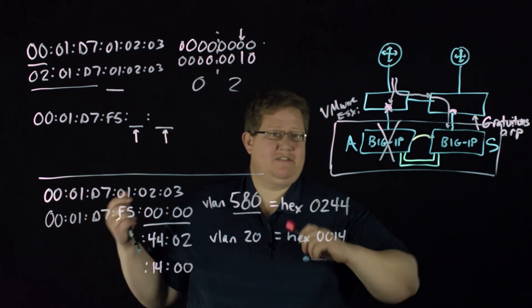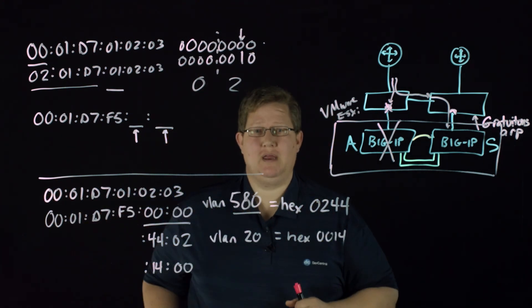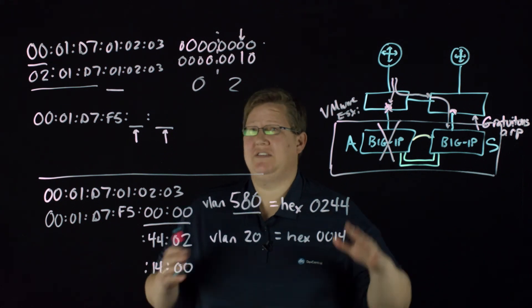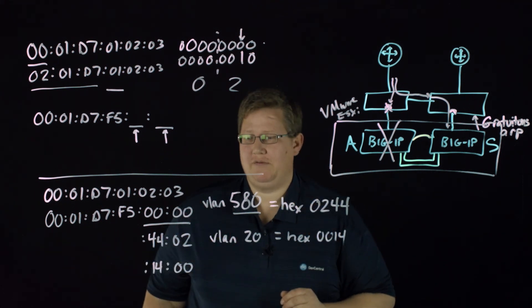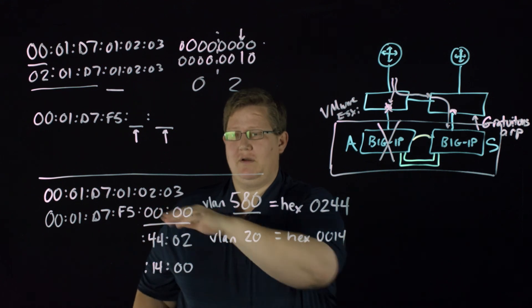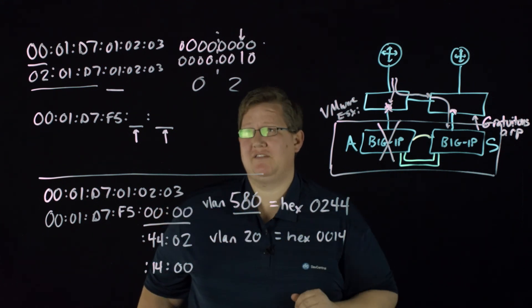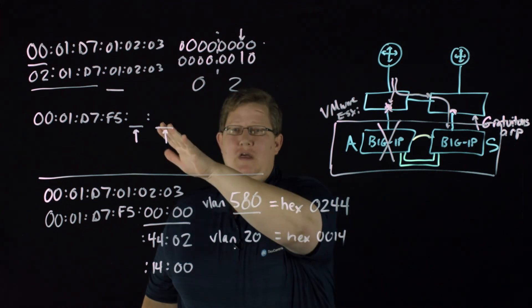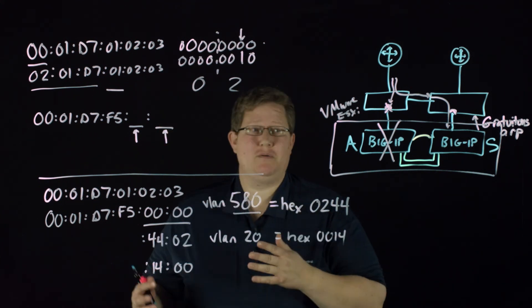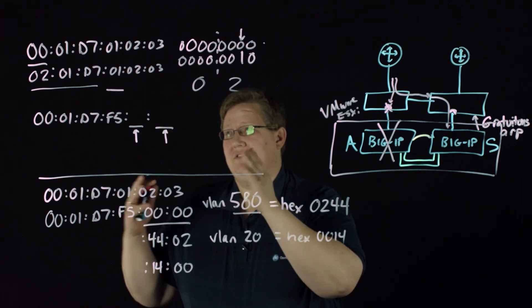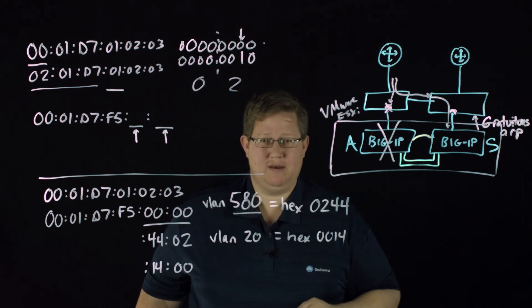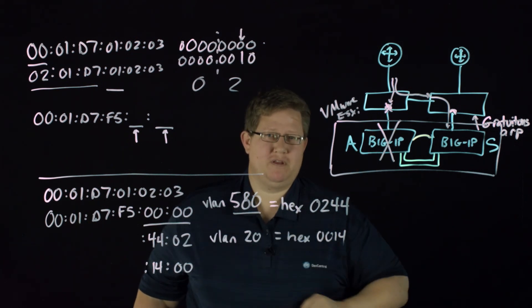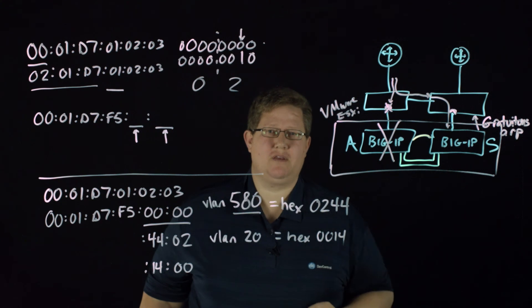So that's MAC masquerading in a nutshell and the different ways that you can approach setting that address. This is done for you based on a per VLAN MAC masquerading. And then you can set your own to have unique identifier for troubleshooting purposes, or you can just set it to whatever you want to set it in and forget it. So hopefully this has been helpful. We will see you out there in the community. Thanks for joining us.